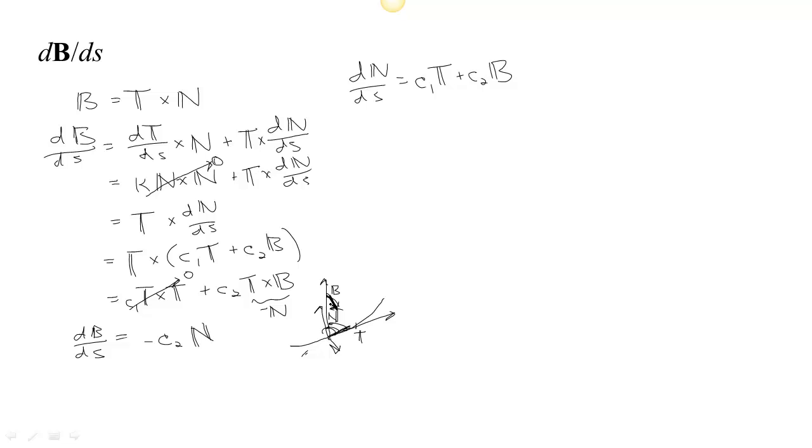Its change is perpendicular to B in the direction of N. That means if we look at this plane, the plane created by N and B, that is the normal plane. And what's happening is that we're sort of twisting in the normal plane. We're twisting around the curve. And so this number, c2, is called the torsion.